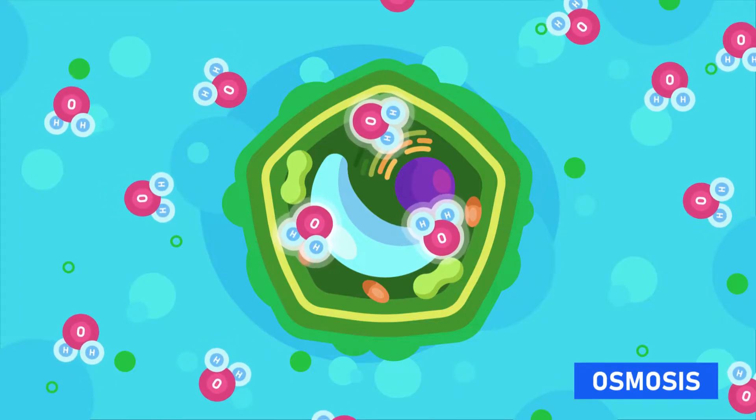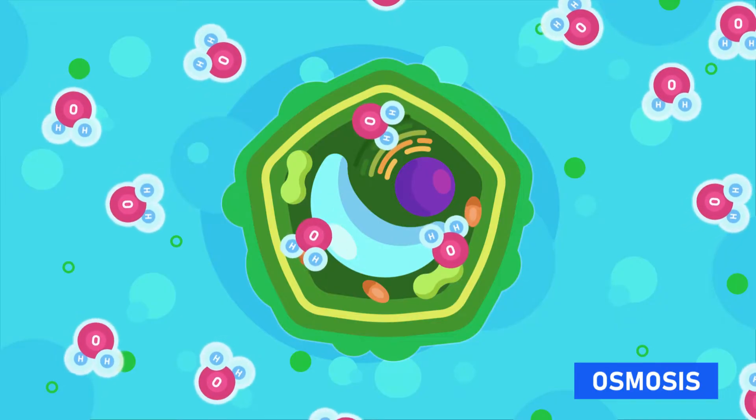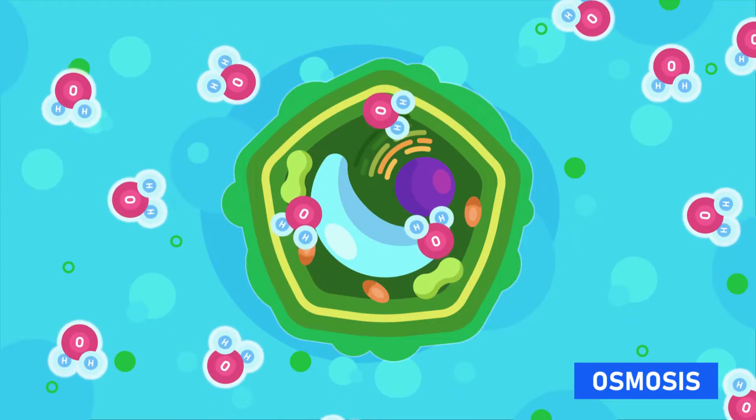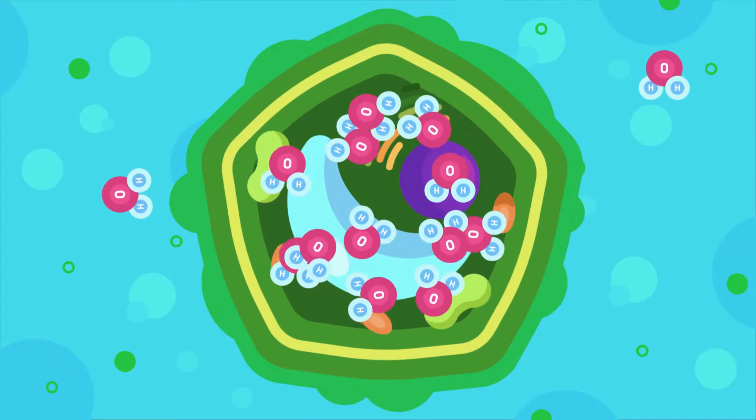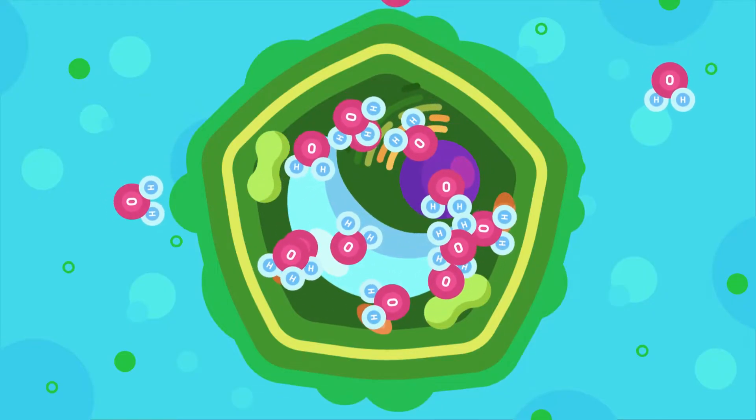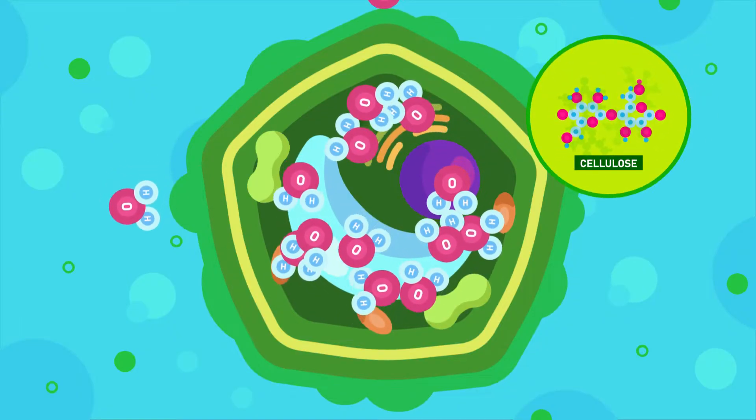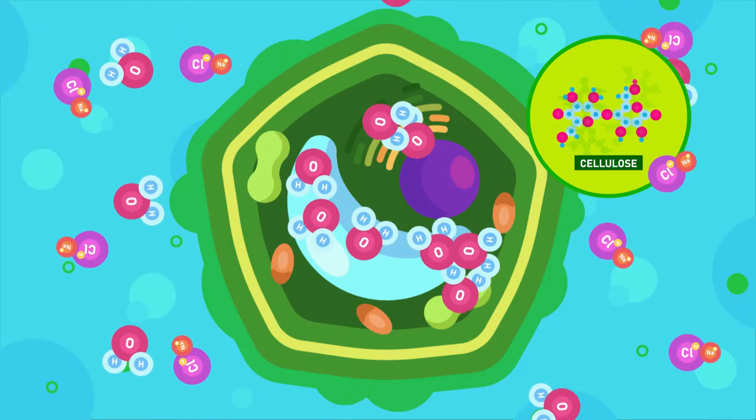Osmosis is a special type of diffusion that allows the movement of a solvent, mainly water, from a region where it is higher in concentration to a region where it is lower through a partially permeable membrane. The membrane here is the cell surface membrane. The cellulose component of the cell wall makes it permeable and allows most substances to pass through.